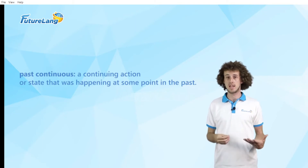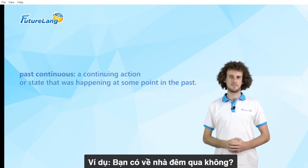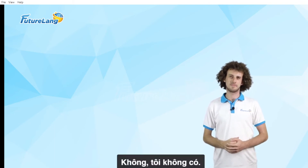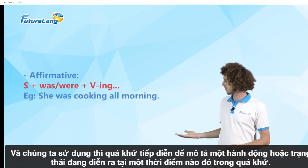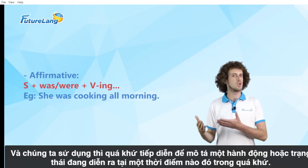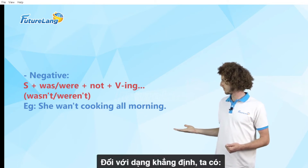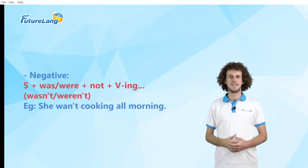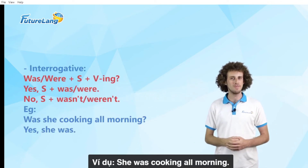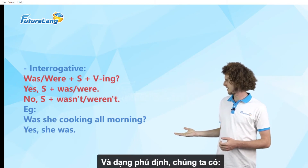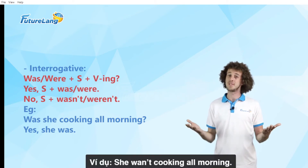We use the past continuous tense to talk about a continuing action or a state which happened in the past. Let's take a look at the structures. For the affirmative form, for example: 'She was cooking all morning.' And for the negative form, for example: 'She wasn't cooking all morning.' And for the interrogative form — for example: 'Was she cooking all morning?' Yes, she was.